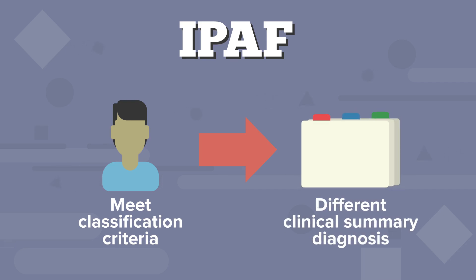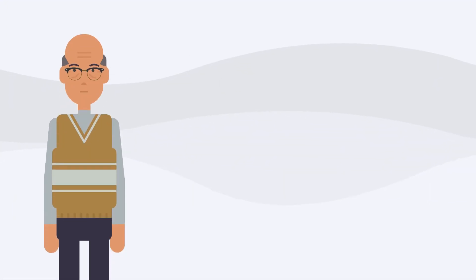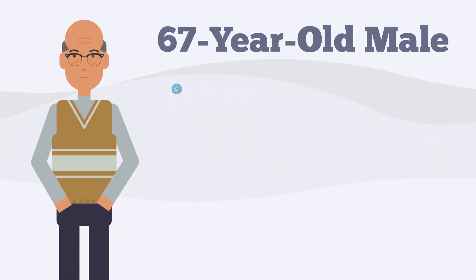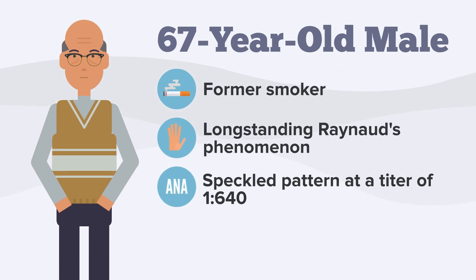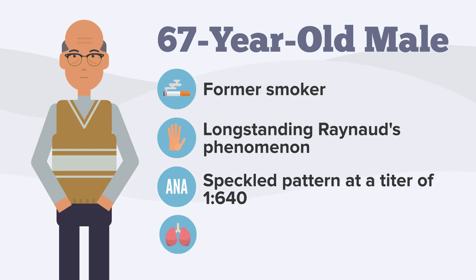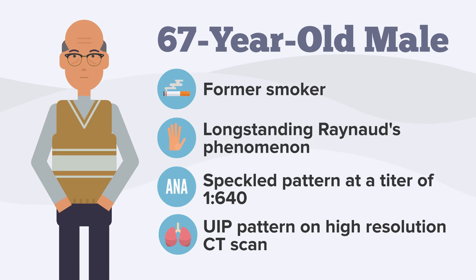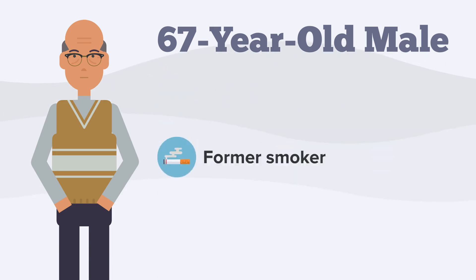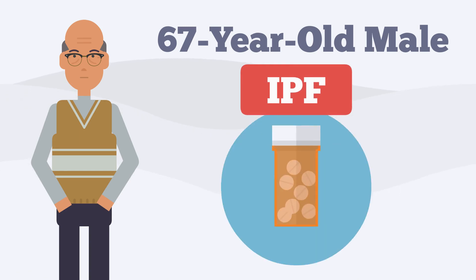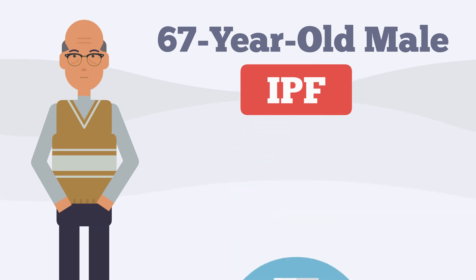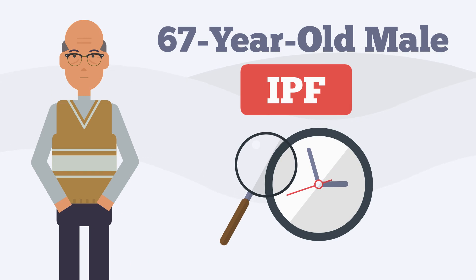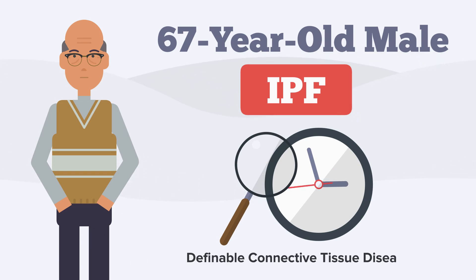The following cases illustrate this point. Consider a 67-year-old male, former smoker, with long-standing Raynaud's phenomenon and ANA in a speckled pattern at a titer of 1 to 640. He has a UIP pattern on high-resolution CT scan. Because this man meets diagnostic criteria for IPF, he was started on an antifibrotic medication. However, because he meets IPAF criteria, it is suggested that he be monitored closely over time for the development of a definable connective tissue disease.